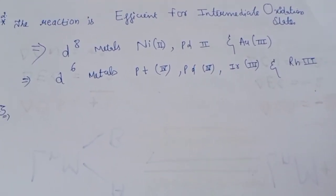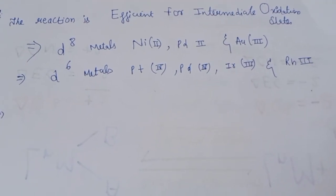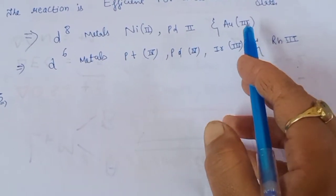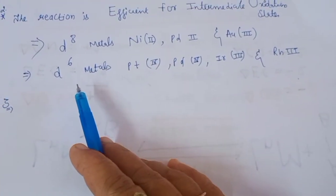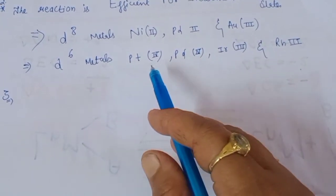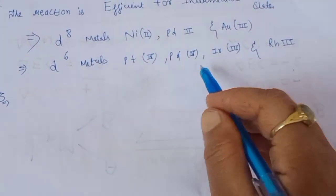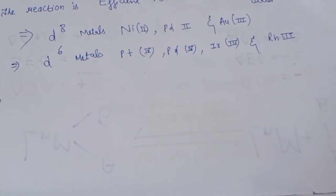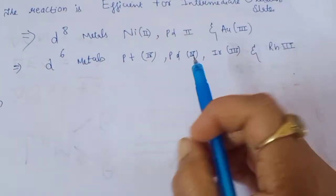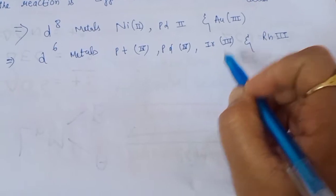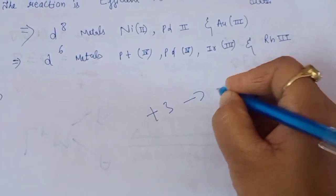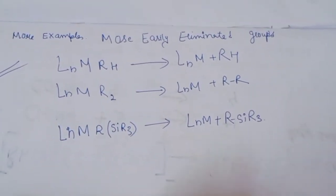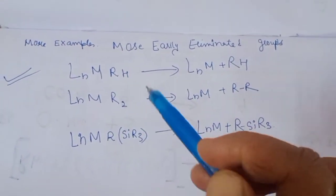Reductive elimination is favorable for metals in intermediate oxidation states, such as nickel(II), palladium(II), and gold(III). For d6 configuration metals — platinum(IV), palladium(IV), iridium(III), and rhodium(III) — higher oxidation states generally favor reductive elimination, because these metals need to gain electrons and change from a higher to a lower oxidation state.